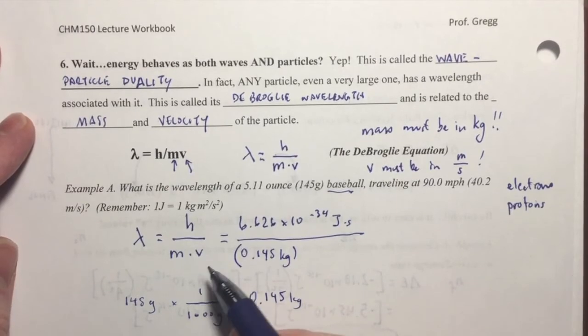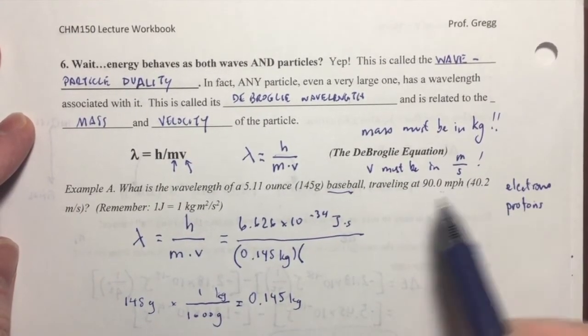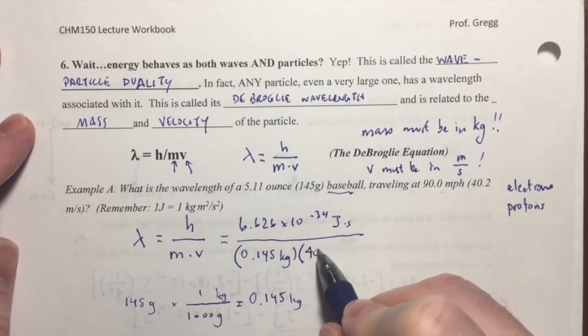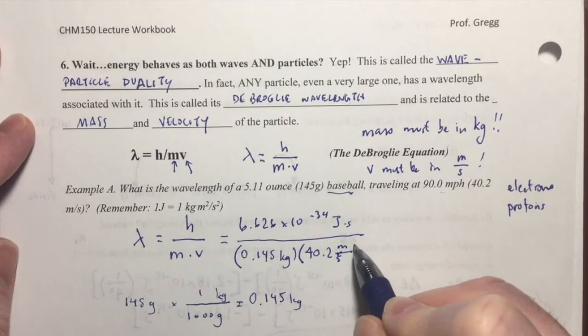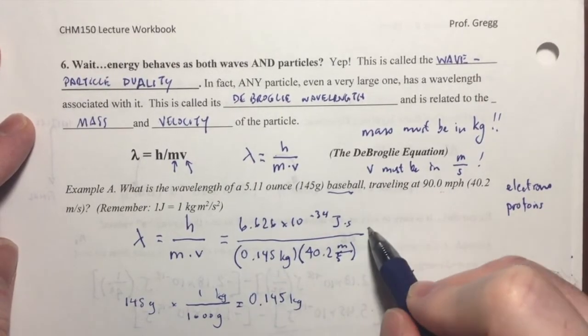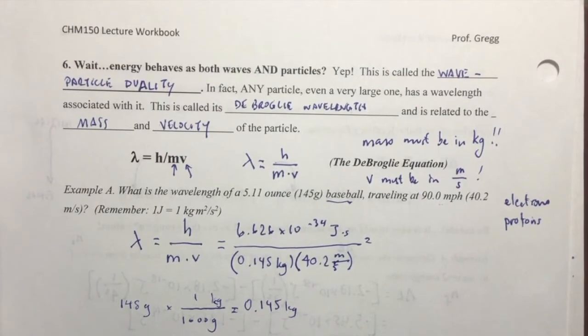Where's my velocity? It has to be in meters per second. And I've given it to you here, 40.2 meters per second. Oops, meters per second. And there I have my numbers. So all I have to do is plug that into my calculator and get my answer.